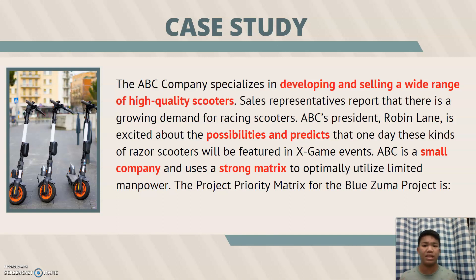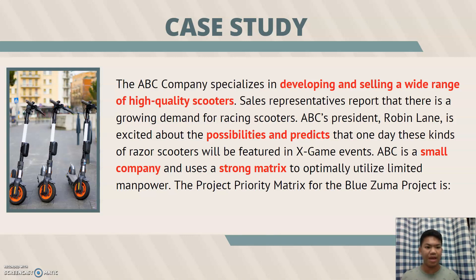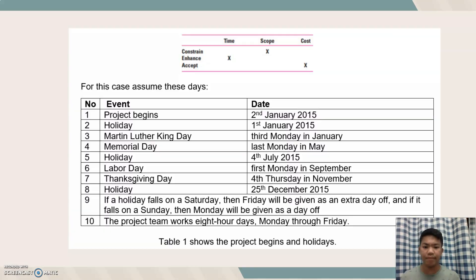ABC Company specializes in developing and selling a wide range of high-quality scooters. The president, Robin Lane, predicts that these scooters will be featured in X Games events. ABC is a small company and uses a strong matrix to optimally utilize limited manpower.